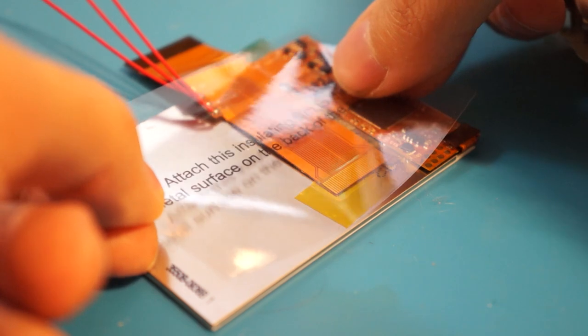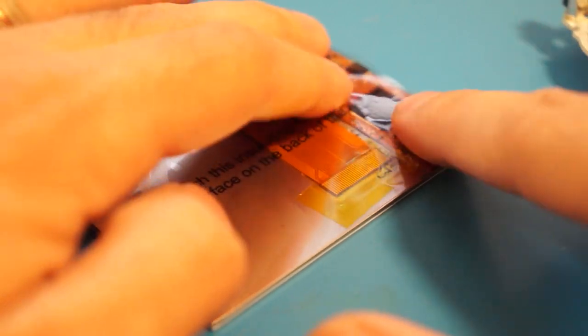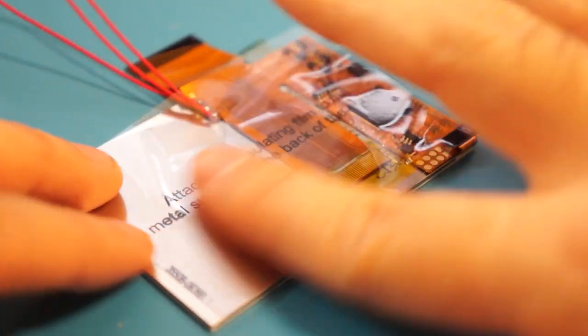Apply the insulating film across the entirety of the display, ensuring you're covering the flex cable components. If you're installing the funny playing kit, use a few strips of Kapton tape instead to cover the components.